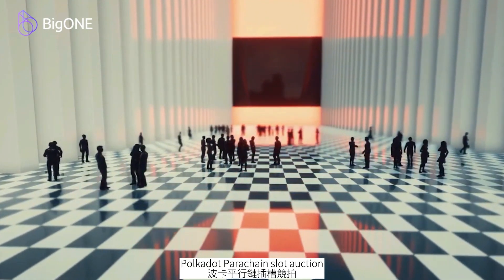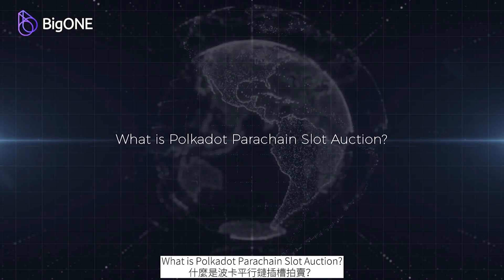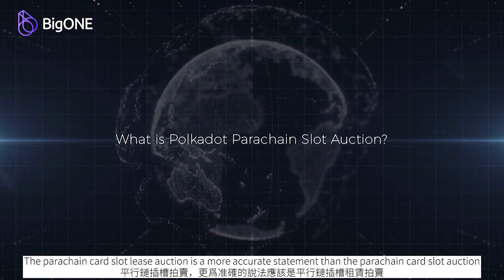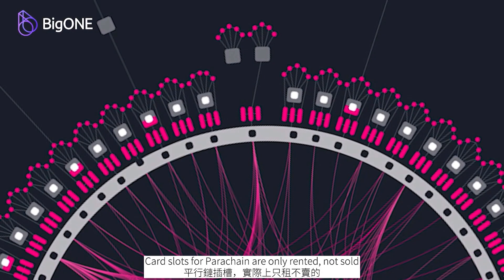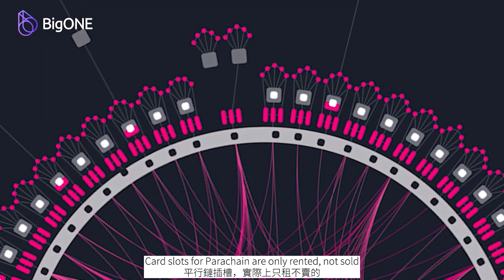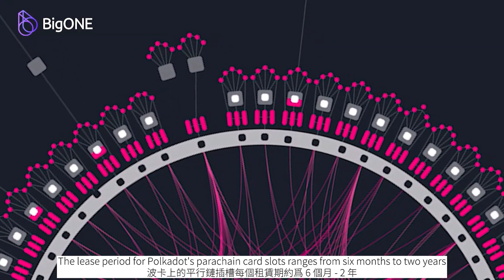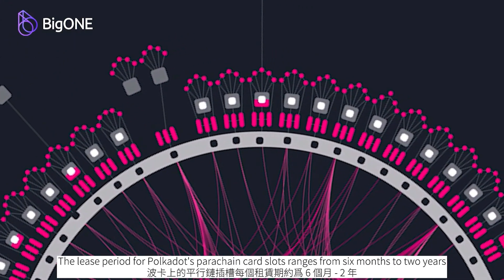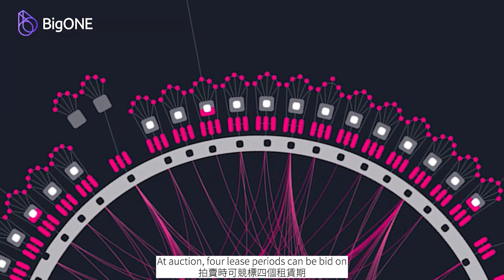What is the Polkadot parachain slot auction? The parachain card slot lease auction is a more accurate statement than the parachain card slot auction — card slots for parachains are only rented, not sold. The lease period for Polkadot's parachain card slots ranges from six months to two years.